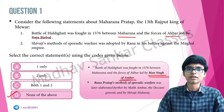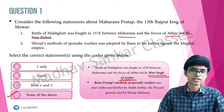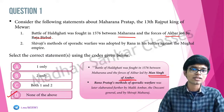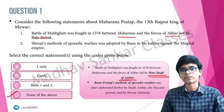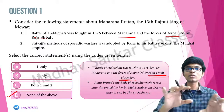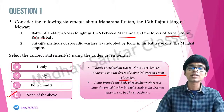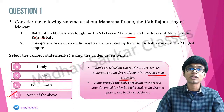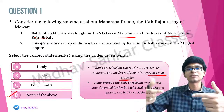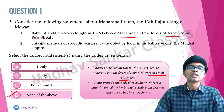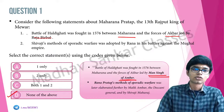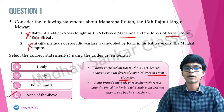Second statement is also incorrect. Shivaji, Rana Pratap, and even Malik Ambar all resorted to sporadic warfare. However, it is not Shivaji's methods which Rana Pratap adopted — it is Rana Pratap's methods which Shivaji adopted. Rana Pratap was a contemporary of Akbar and Shivaji is a contemporary of Aurangzeb, three generations later. So Rana Pratap cannot adopt something from Shivaji. Correct answer: neither of the above, option D.